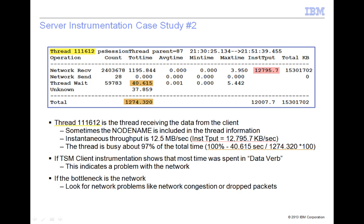Sometimes the node name is included in the thread output and you can skip the show sessions search and go right to the thread in the TSM server instrumentation. In this case, the node name is not included. We can see that the instantaneous throughput is 12,795.7 kilobytes per second, or 12.5 megabytes per second.